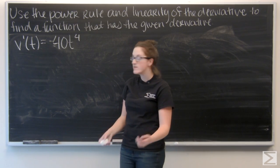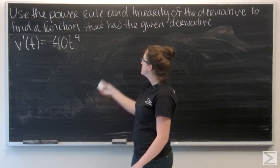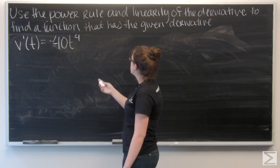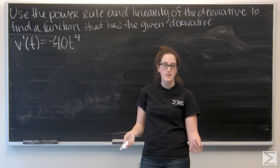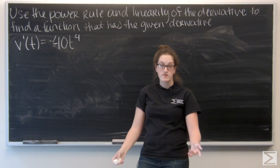Okay, so for this problem I'm given a derivative, v prime of t, and the following instructions. Use the power rule and linearity of the derivative to find a function that has the given derivative. So essentially, I'm given v prime of t, and I want to use the power rule and linearity to find v of t.